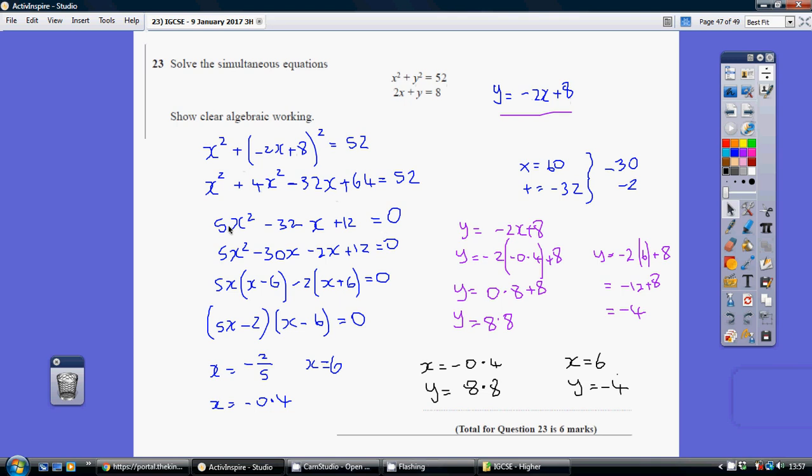Then gathering up my x squareds I get this. Now you could use the quadratic equation at this point. a equals 5, b minus 32, c equals 12. That's fine. I've factorised it. So I've factorised this down to 5x minus 2 times x minus 6 equaling 0.